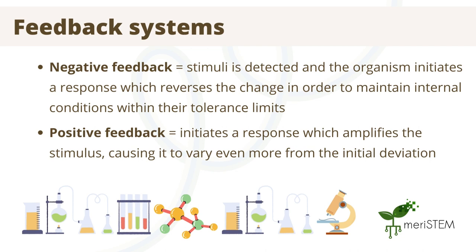The second type of response is positive feedback, which is less commonly seen in biological systems. Positive feedback initiates a response which amplifies the stimulus, causing it to vary even more from the initial deviation. For example, we see this in childbirth with the release of oxytocin promoting the release of even more oxytocin, allowing for faster and stronger contractions in order to speed up the process of labour.